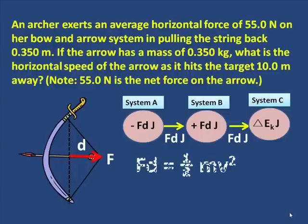Now here the arrow starts from rest, so we can write Fd, the work it does, equals half mv squared. And then we put in the numbers. We find out that the force through the distance, what is this work done?